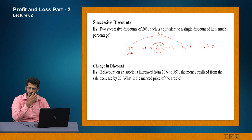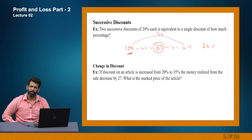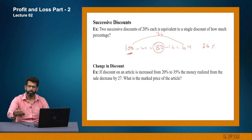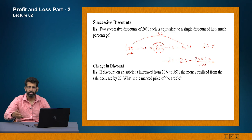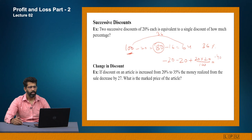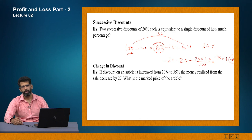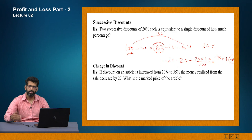Two successive discounts of 20% each is equivalent to a single discount of what percentage? Use the successive percentage formula: -20 - 20 + (20 × 20/100) = -40 + 4 = -36%. The negative sign means it is a discount, so the effective discount is 36%. This is the standard method for calculating equivalent single discounts from successive discounts.